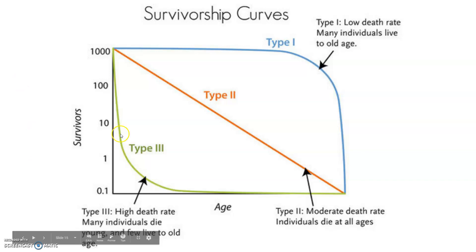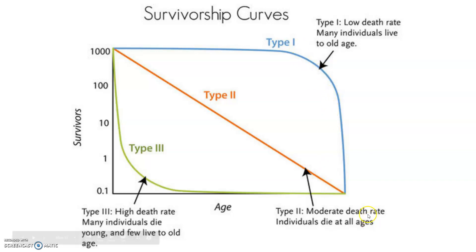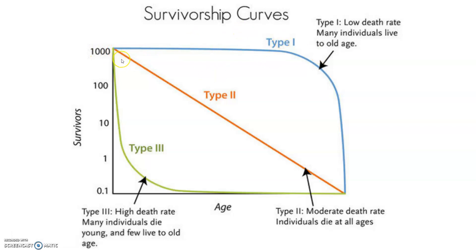A type 1 curve — we also call this late loss — means most individuals will survive until old age, and then we see a mass drop-off. Type 2 shows a constant loss, where the death rate is relatively the same as you progress through old age.